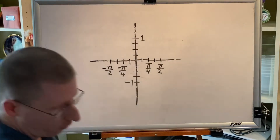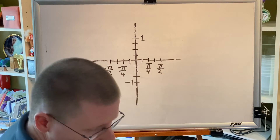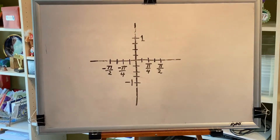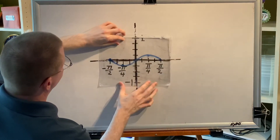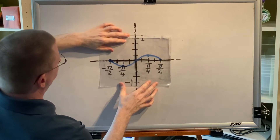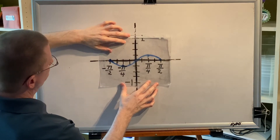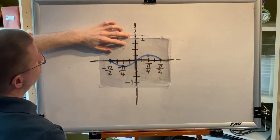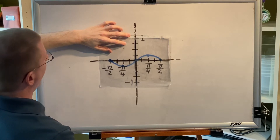Let's look at a different graph. By the way, both of these graphs come from trigonometry. So this is the before, and we're going to test for x-axis, y-axis, and origin. Let's start with x.